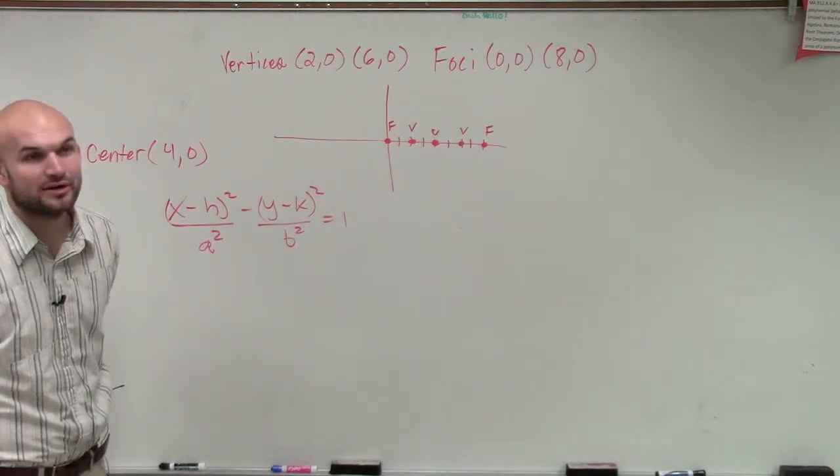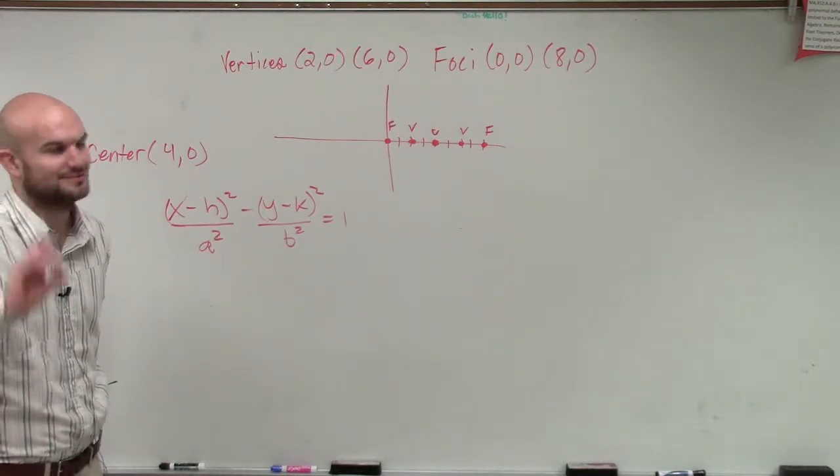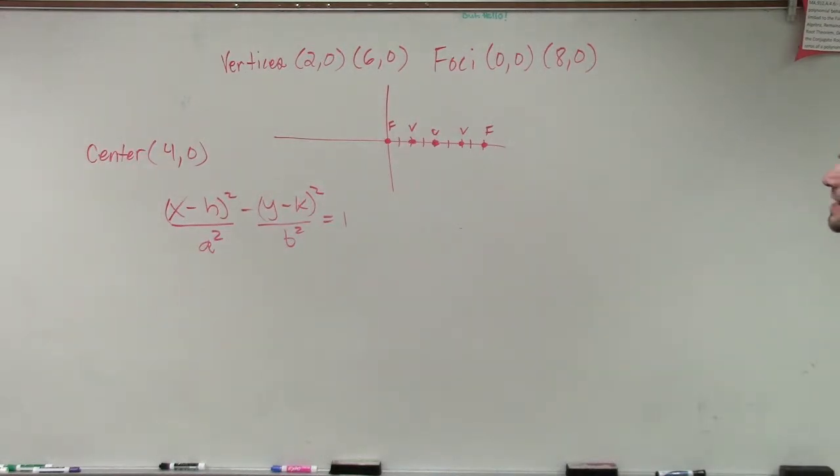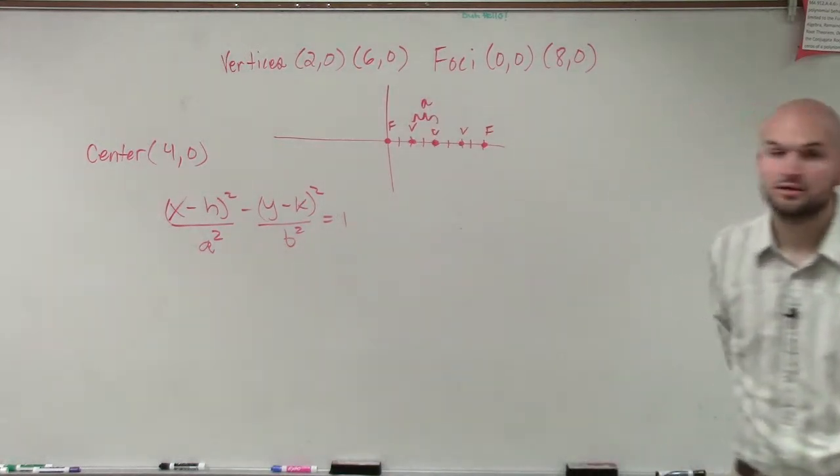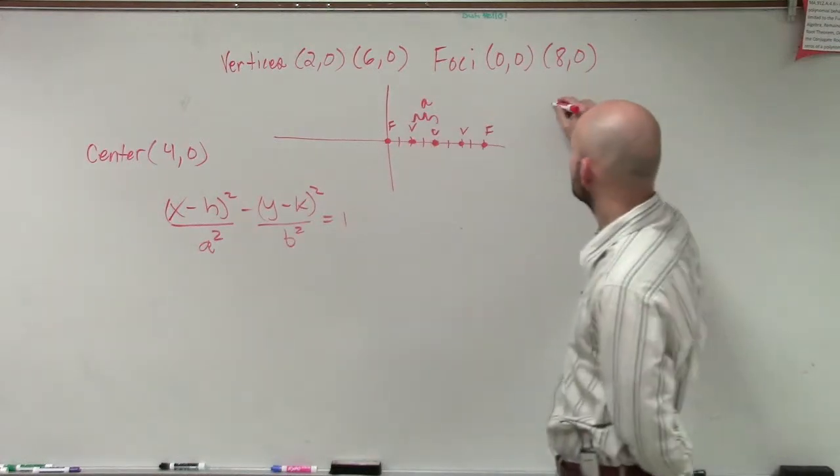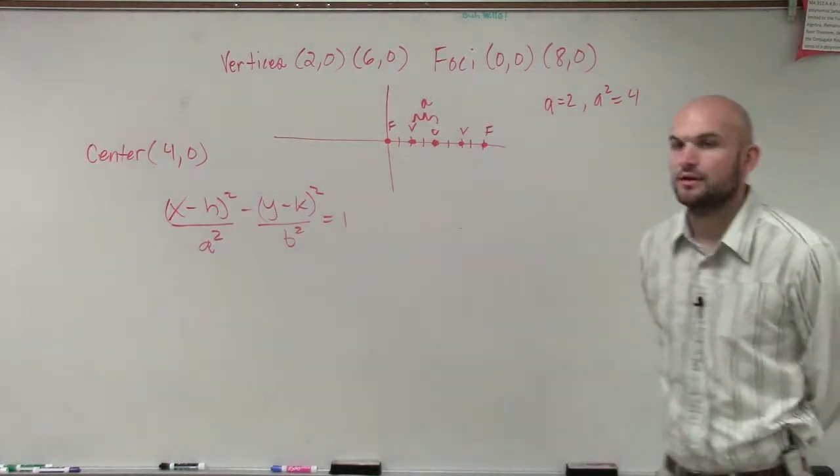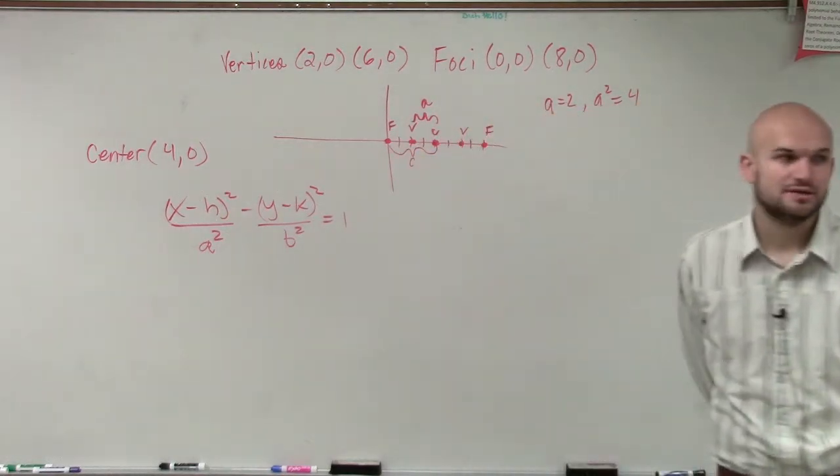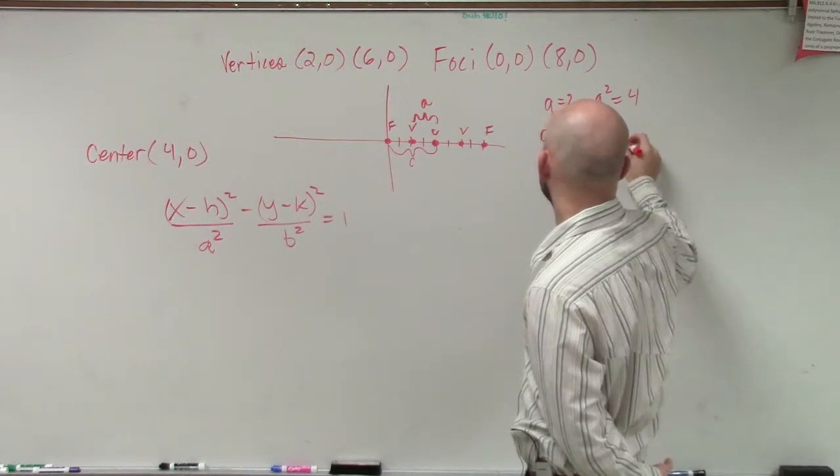So now the next thing we need to do is, so let's go ahead and look at this. We have our vertices and our foci. Can we determine what our a, b, and c are? Well, obviously, we remember that our a was the distance from your vertices to your center. So this distance is 2, so we could say a equals 2. Therefore, a squared equals 4. Our c is the distance from our foci to our center, which in this case is 1, 2, 3, 4. So we could say c equals 4, so c squared equals 16.